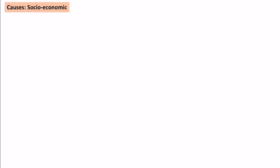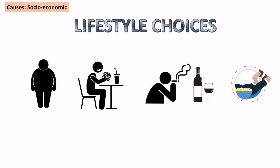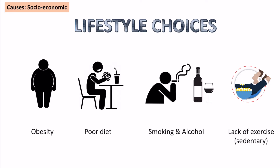In terms of social and economic causes, the main idea is lifestyle choices. This can include a varied amount of factors such as obesity, poor diet, smoking and alcohol, and the fact that people are generally less active than they used to be. We call this a sedentary lifestyle — a lack of exercise.